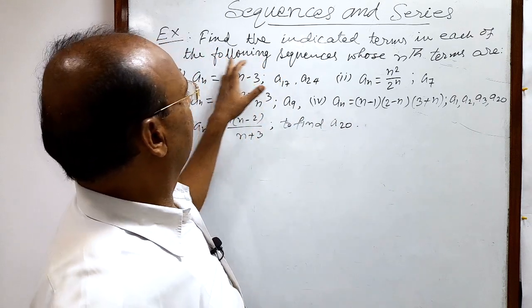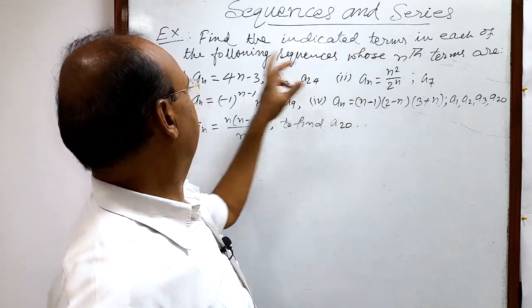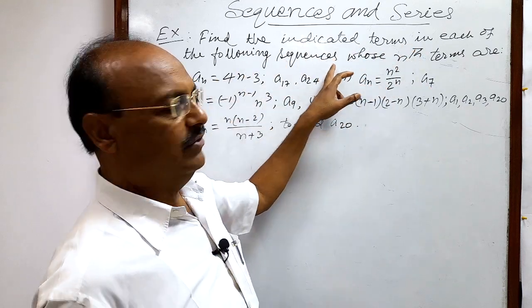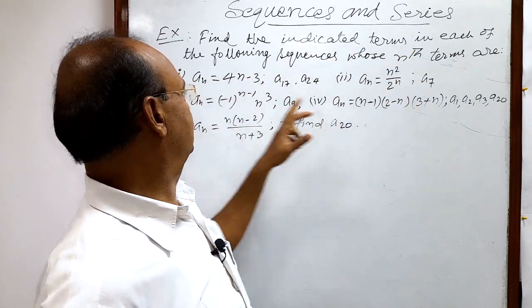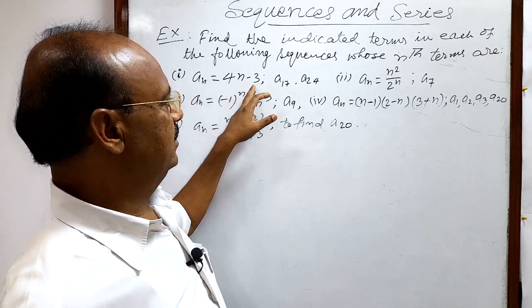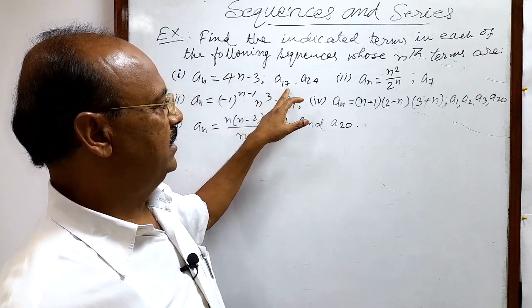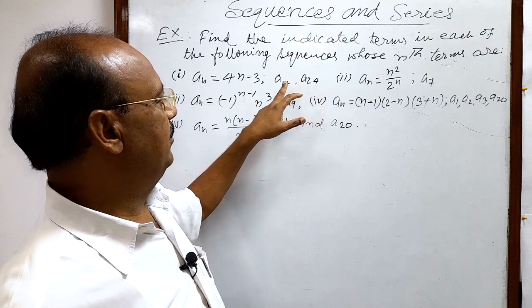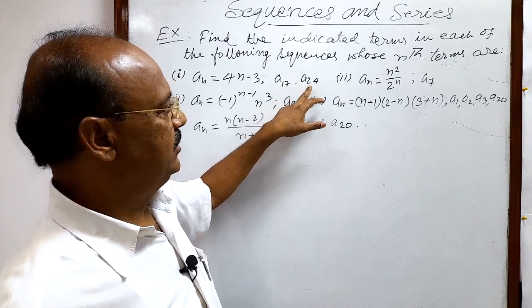Here question is, find the indicated terms in each of the following sequences whose nth terms are: an is equal to 4n minus 3. We have to find out a17, a24, means we have to find out 17th term as well as 24th term.